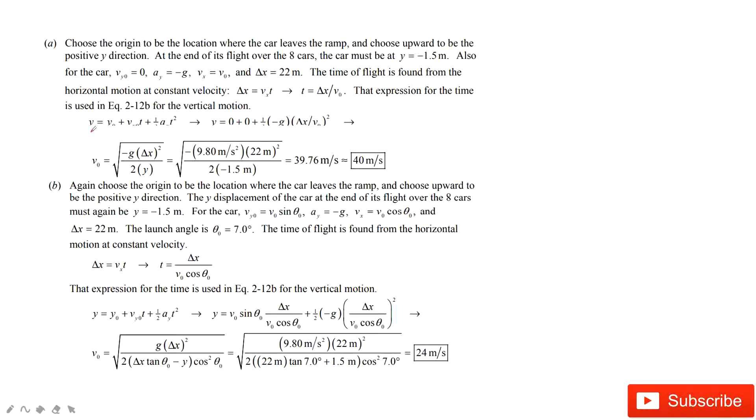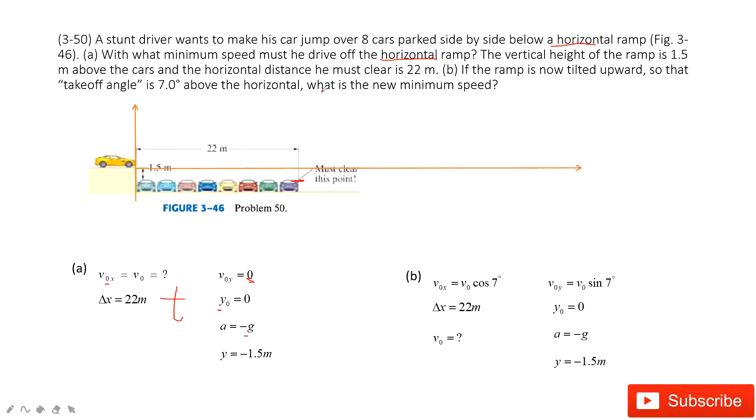First of all, we need to find the time t. How can we get the time t? Look at the y component. The y component: y equals one half negative g t squared. And we solve the equation, we get t.